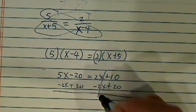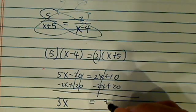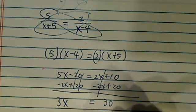And here I have x moved over, so I have 3x is equal to 30 over here. X equals 10.